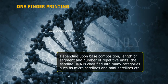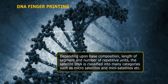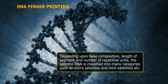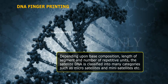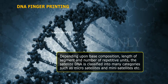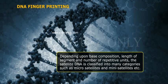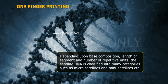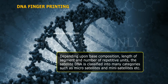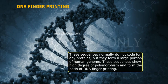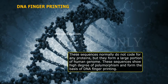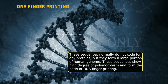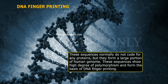Depending upon base composition, length of segment, and number of repetitive units, the satellite DNA is classified into many categories such as microsatellites, minisatellites, etc. These sequences normally do not code for any proteins, but they form a large portion of the human genome.